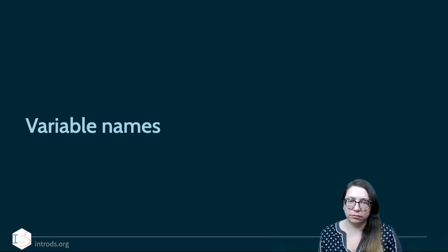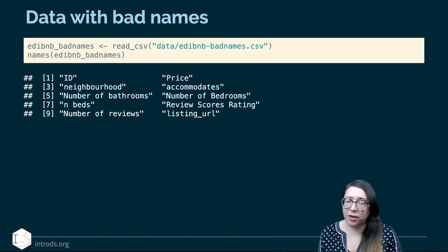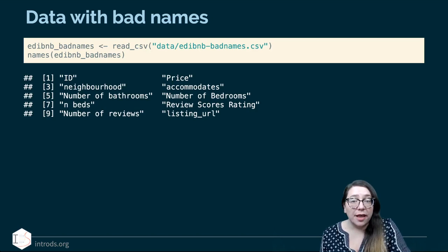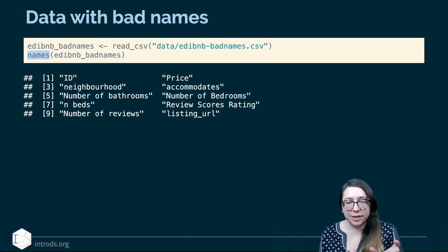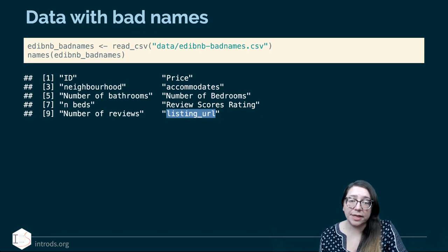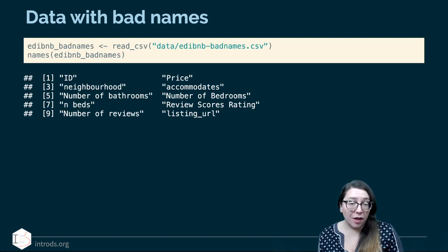Next, let's talk about variable names. It's very common to get a data file where the names of the variables are not very user-friendly or coder-friendly. Here I have a data set called edibnb — the Edinburgh Airbnb data set — but I've modified it and called it edibnb-badnames. When I read this data frame into R and look at the column names using the names function, some are in capital letters, some have spaces in the variable names, some follow the snake_case convention, and others use a variety of other structures. While R is perfectly happy handling variable names like this, you're going to run into issues if you want to use the variable name as-is.